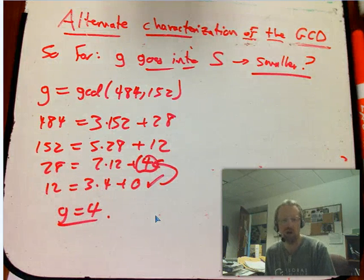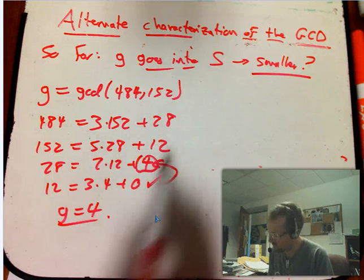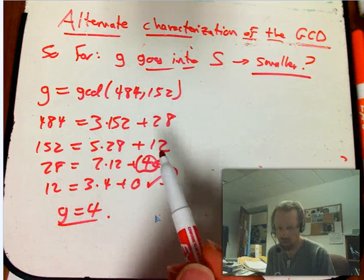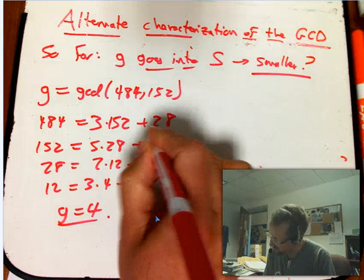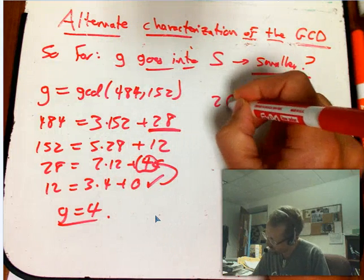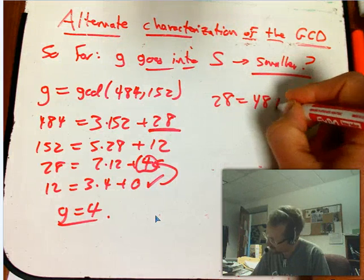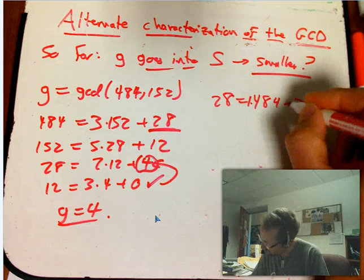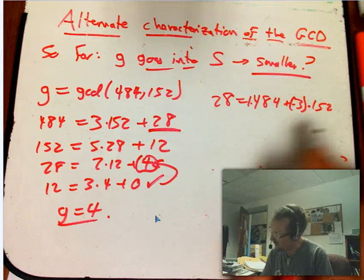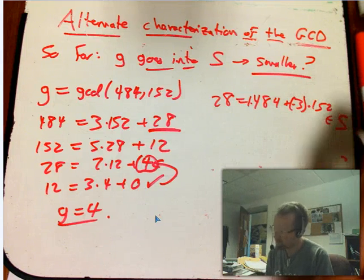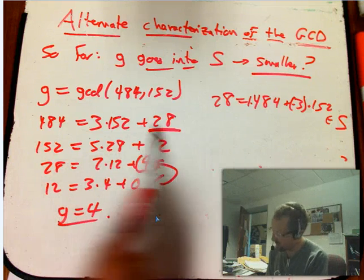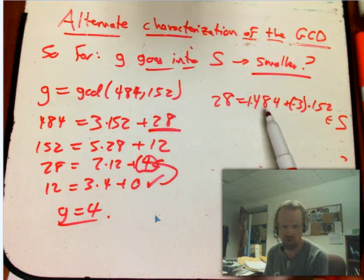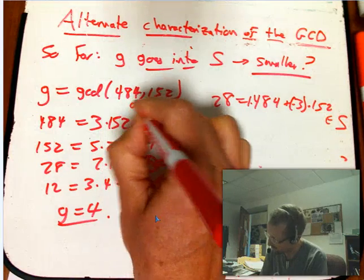So what's the point of this computation right now? It's because if we look a little more closely at what happens with the Euclidean algorithm, we're going to discover something really interesting about how G relates to S. That's because, let's look up here at the first stage, 28. I'm going to solve that for the 28, 484 minus 3 times 152, or 1 times 484 plus a minus 3 times 152. That is in S. So that 28 remainder, simply because exactly how division works, it is something that's a linear combination, integer linear combination of A and B, 484 and 152. This is going to be our A, that's our B.